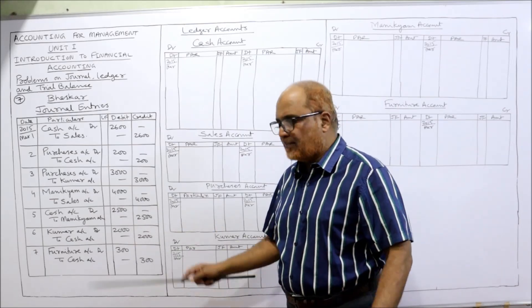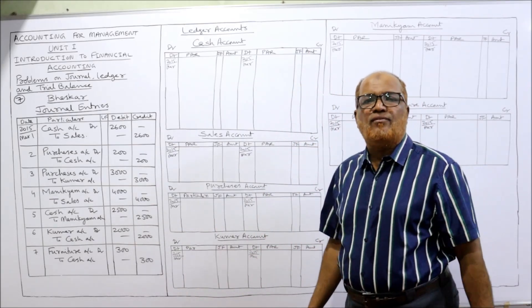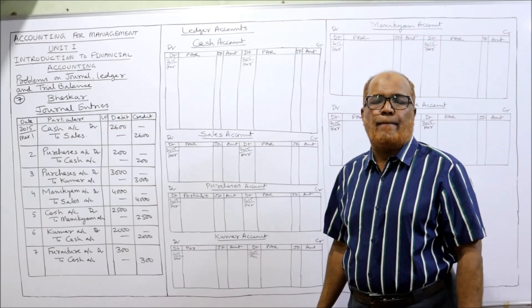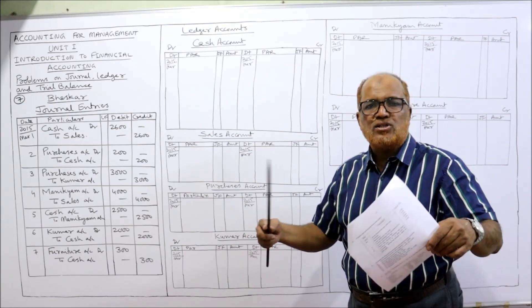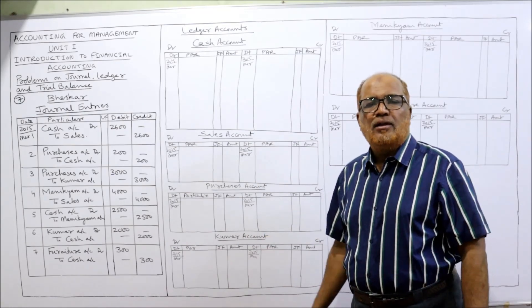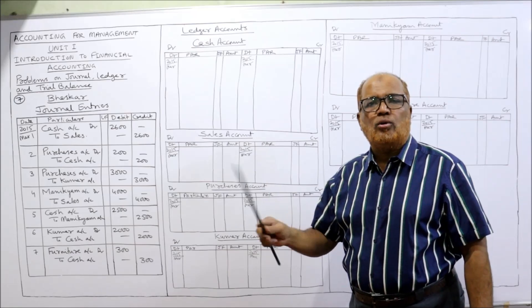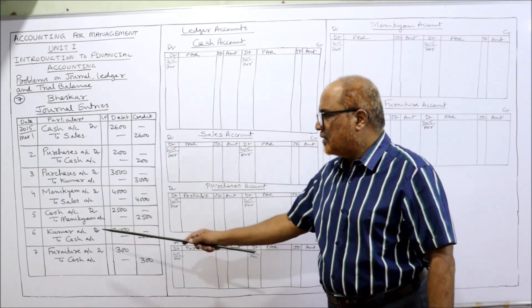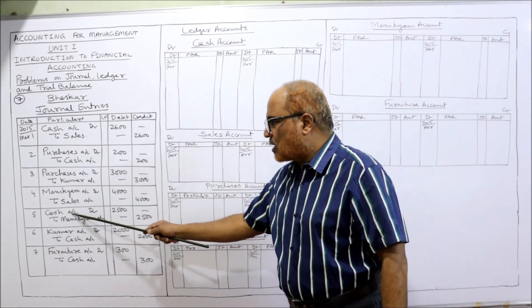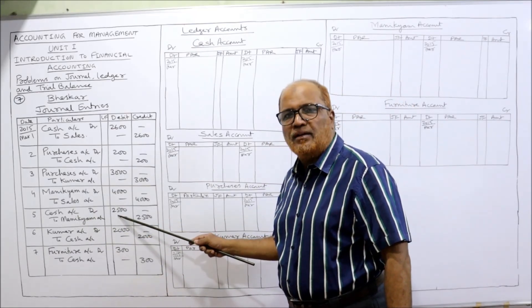Fifth transaction — cash received from Moneycam. When cash is coming in, cash should be debited. Entry: Cash account Dr. to Moneycam — 2000, being the cash received.